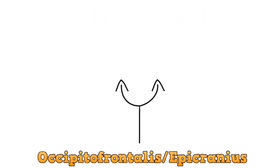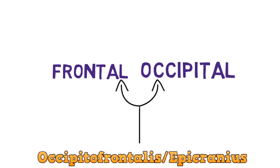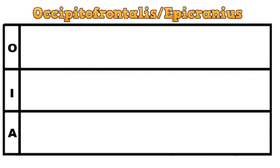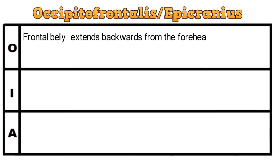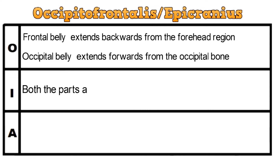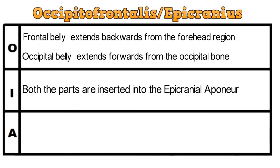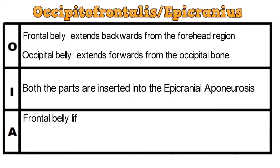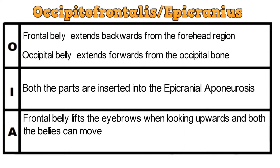Let's start with the first muscle, the occipitofrontalis muscle, also known as the epicranius. Epicranius has two bellies: the frontal and the occipital. The frontal belly extends backwards from the forehead region and the occipital belly extends forward from the occipital bone. Talking about the insertion, both parts are inserted into the epicranial aponeurosis. The action of the frontal belly is to lift the eyebrows when looking upwards, and both bellies can move the whole scalp.